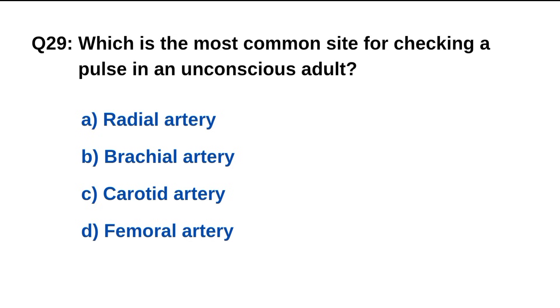Question number 29. Which is the most common site for checking a pulse in an unconscious adult? The right option is C: Carotid.